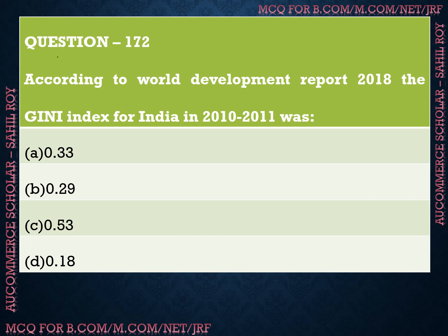Question number 172: According to the World Development Report 2018, the Gini index for India in 2010-11 was? We have four options: Option A is 0.33, Option B is 0.29, Option C is 0.53, and Option D is 0.18. The correct answer is Option A — 0.33. The Gini index for India in 2010-11 was 0.33.